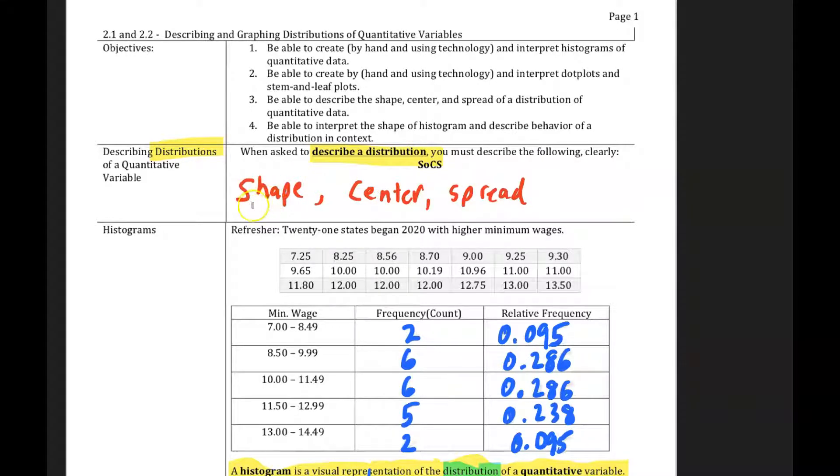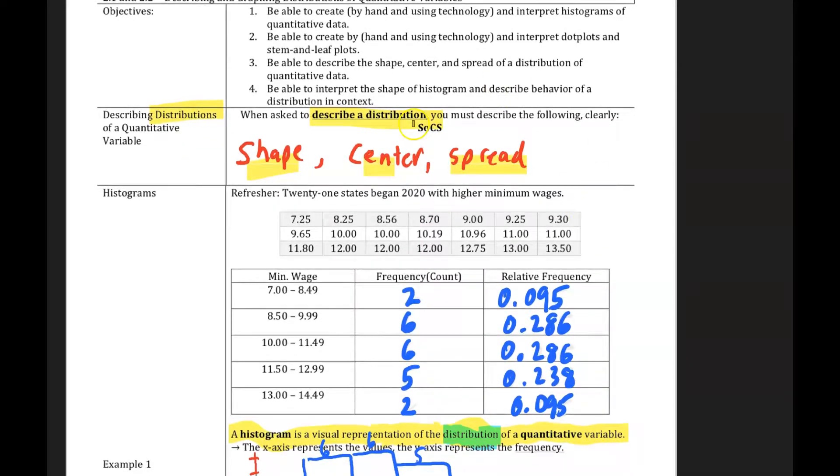And so you're going to be asked to describe the distribution of data or a variable. And when we ask that, we are asking for you to tell us what the shape is, what the center is, and what the spread is. We'll have to talk about those terms, but keep that in mind. So shape, center, and spread.